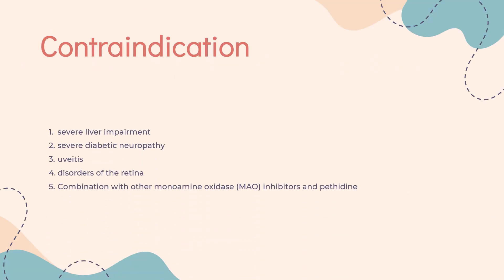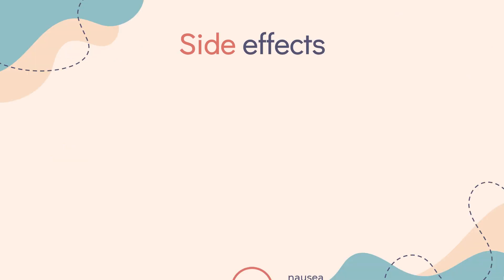Contraindications. Safinamide is contraindicated in people with severe liver impairment, with albinism, retinitis pigmentosa, severe diabetic neuropathy, uveitis, and other disorders of the retina. Combination with other monoamine oxidase (MAO) inhibitors and pethidine is also contraindicated.